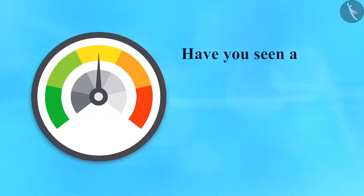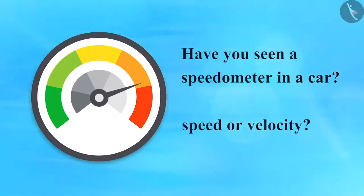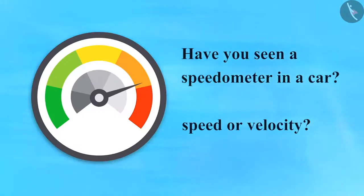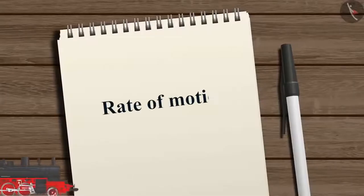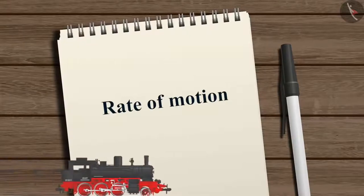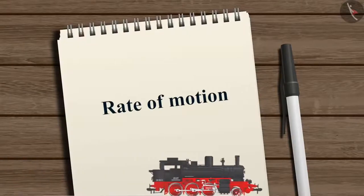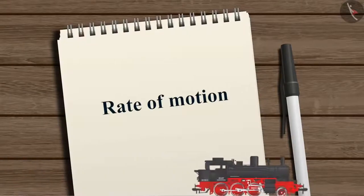Have you seen a speedometer in a car? What does it measure — is it speed or velocity? Earlier, we learned about the rate of motion, which is the rate of change of position of an object in the given time interval.